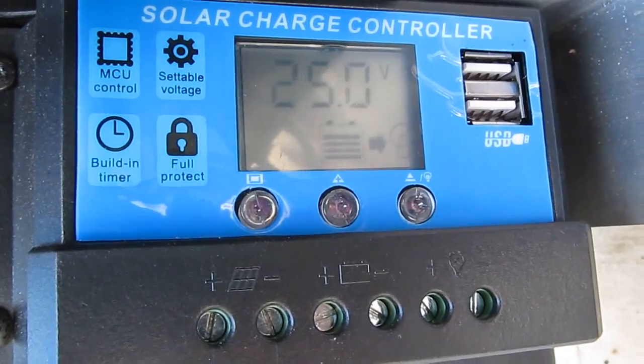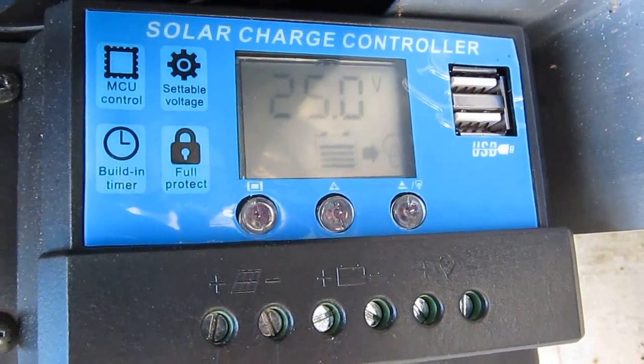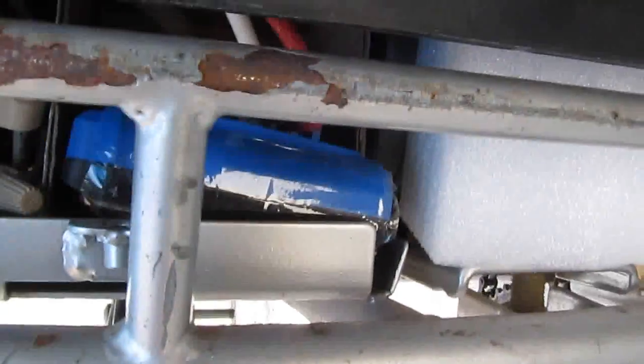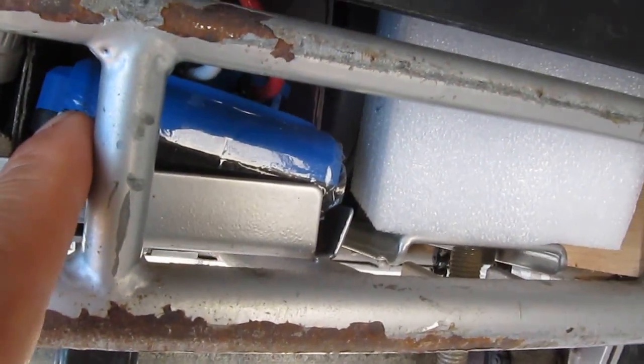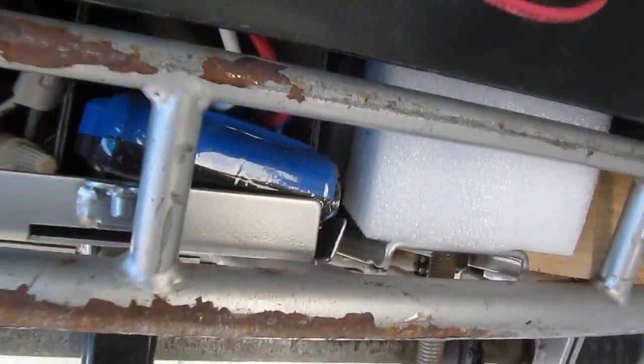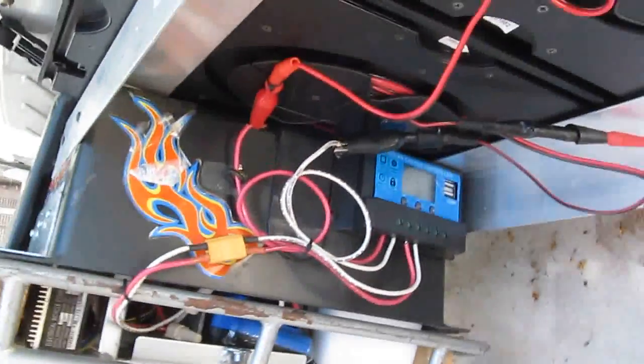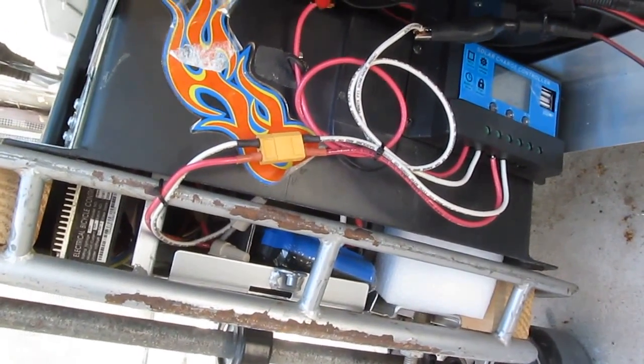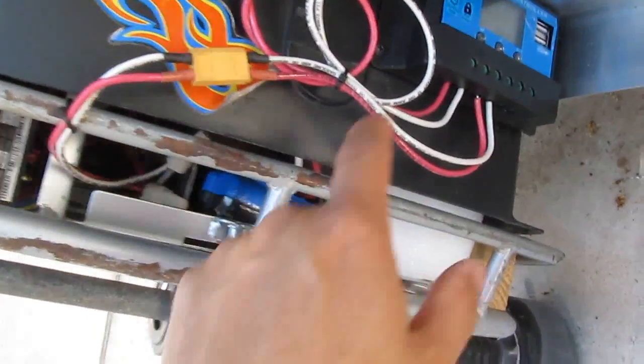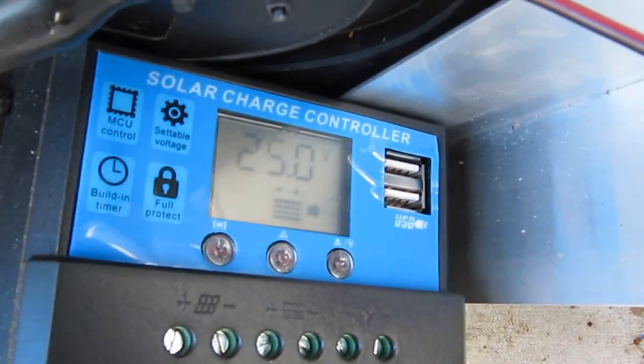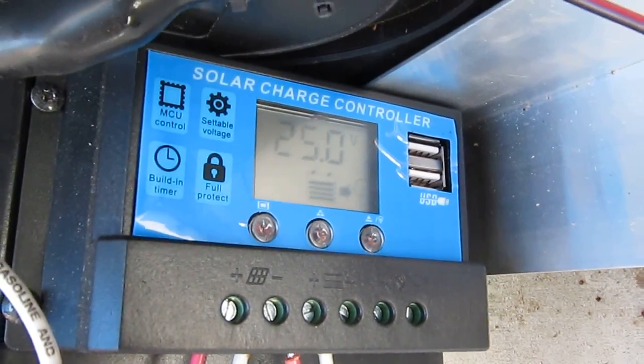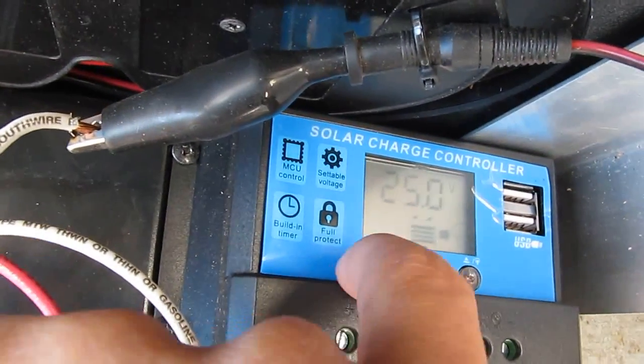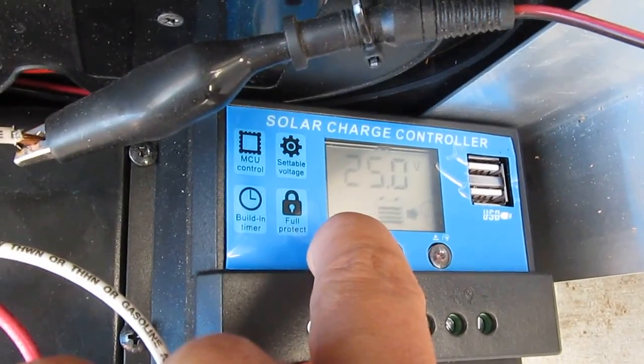Alright, let me show you my setup here. I have my controller connected to my Cobalt tool battery. And it's right here. And I modified my go-kart to run on this Cobalt tool battery. And it was from my previous video. But anyway, it's being connected right now. And my battery right now is 25 volts.